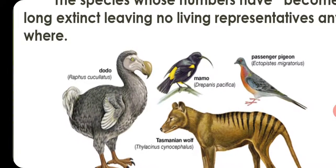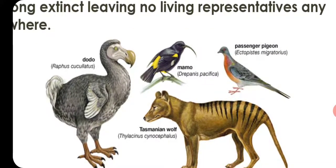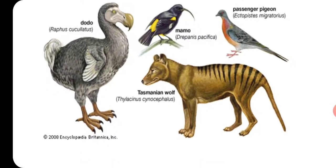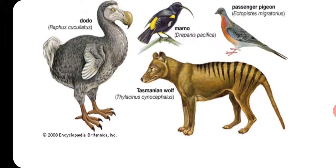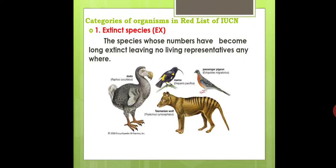Examples of extinct animal species include the Dodo, Mamo, Passenger Pigeon, and Tasmanian Wolf. These are some animal examples of extinct species; many others exist as well.